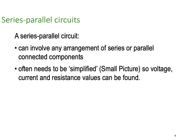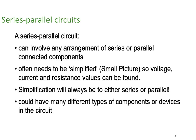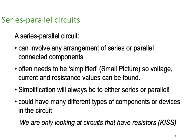Voltage, current, and resistance values can be found, and simplification will always end as either a series or parallel network. The circuit could have many different types of components — resistors, capacitors, switches — but we're going to use the KISS principle: Keep It Simple, Stupid, and only use resistors as we go through our explanation.